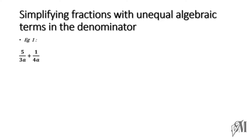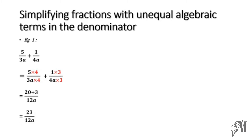Now we are going to equate the denominators to 12a. For that we multiply the first fraction by 4 and the second fraction by 3, so that you get the common denominator as 12a. Then 5 times 4 is 20 and 1 times 3 is 3, so the final answer becomes 23 over 12a.